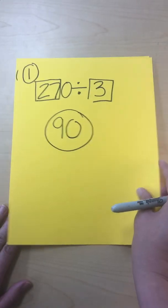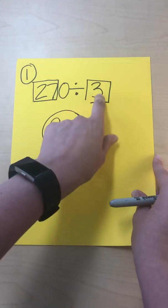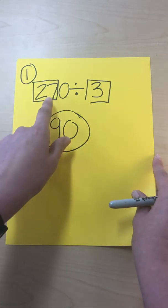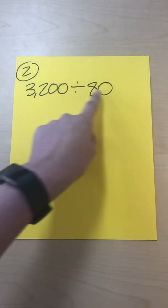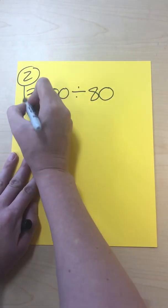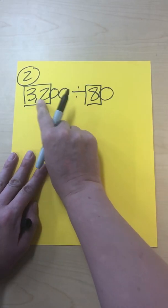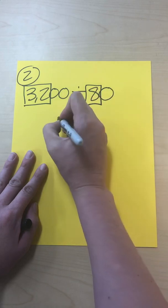Number 2 and number 3 are going to be a little bit tougher, but remember on number 1, we just did 27 divided by 3 is 9, then we just dropped the 0 down. On this next one, you're going to see there's zeros over here too. So we actually have to do something a little different. We're still going to do our basic math facts, which is 3240 divided by 80, and that's 4.